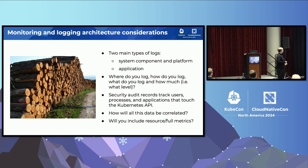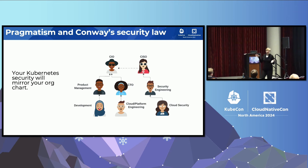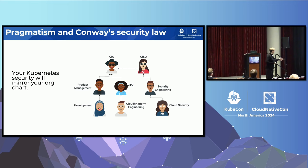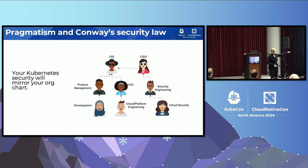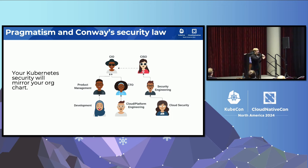Conway's Law: your technology deployments will mirror your org chart. It's the same with security. How well these people get along, what your policies and standards are like — does the CISO and the CIO get along, or do they hate each other? I have more than once cried to get the logging team to take the Kubernetes cluster logs. They didn't want to take it — they thought they shouldn't be doing containers. I'm like, dude, that ship has sailed.